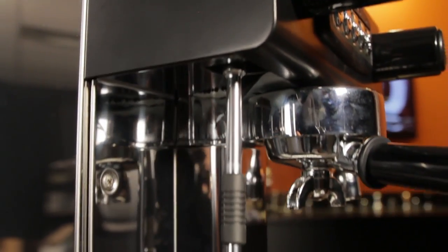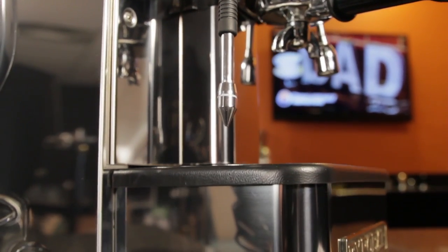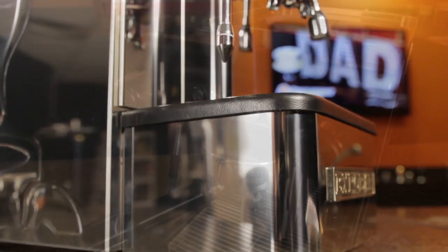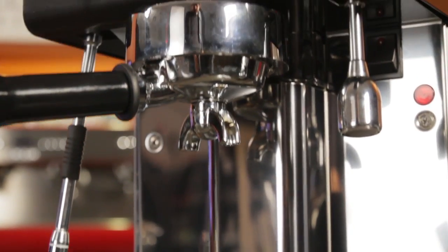With a 1.8-liter copper heat-exchange boiler, Dad's going to get plenty of power. If lattes or caps are his thing, he can brew and steam at the same time. Programmable buttons control volumes, and a thermosiphon brew group yields consistent brew temps.